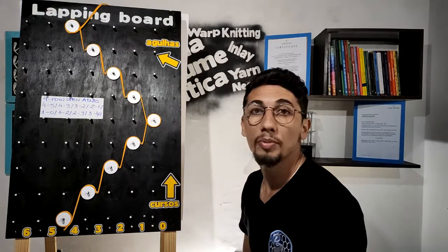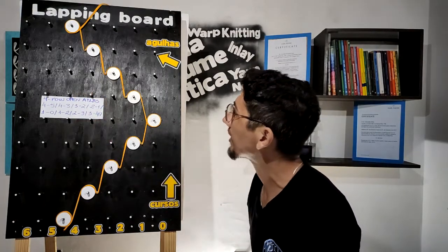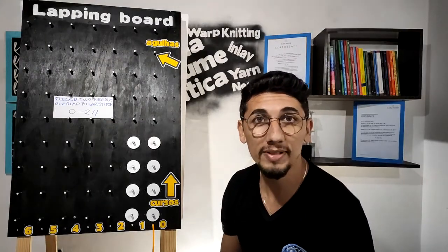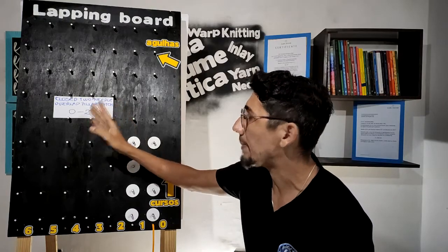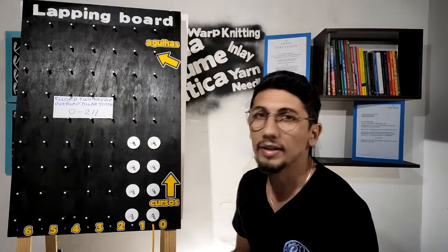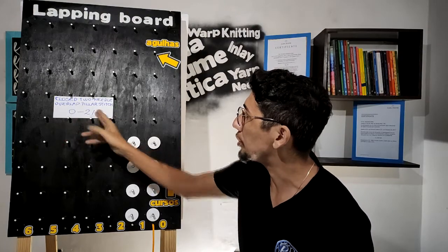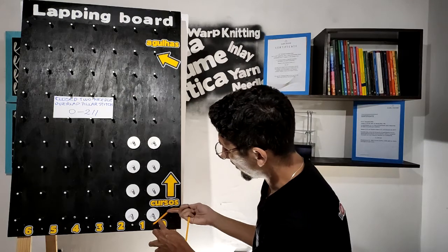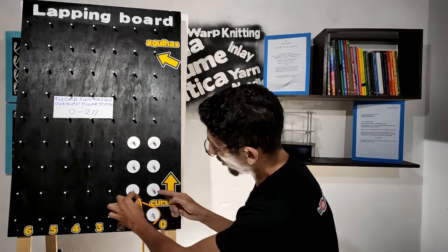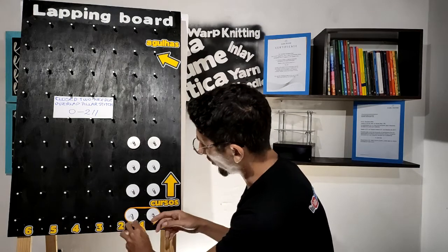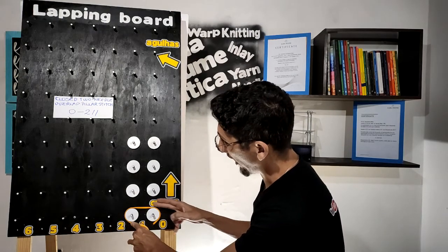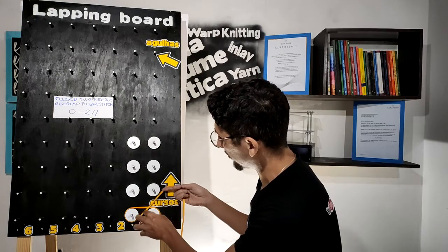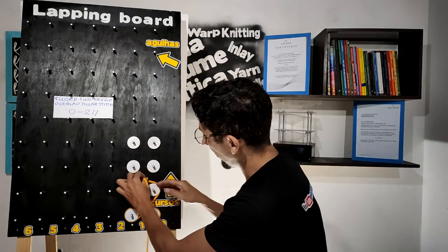This is the representation of the four-row open atlas on the lapping board. Now let's represent the closed two-needle overlap pillar stitch, which has chain notation zero-two. We need to start on zero and go to two — notice that we have overlap around two needles — and again go to zero and two.